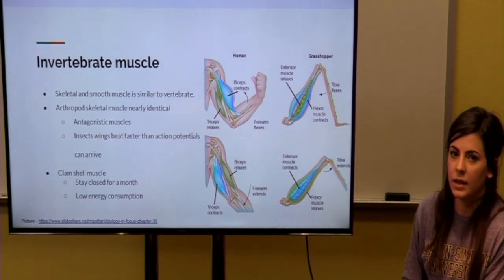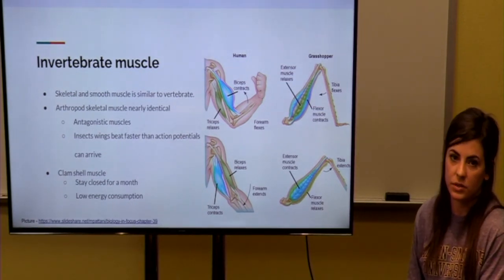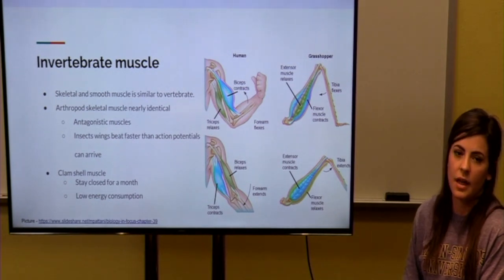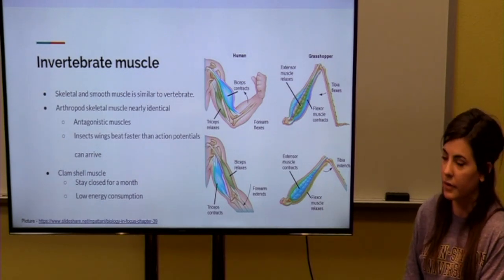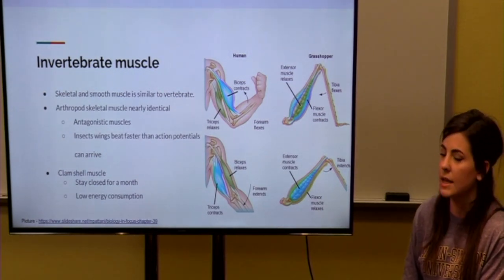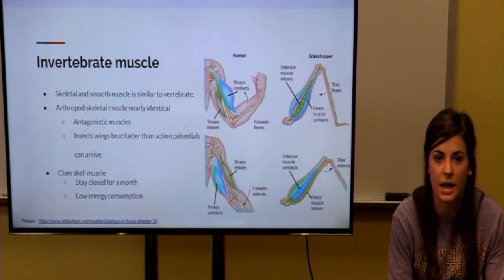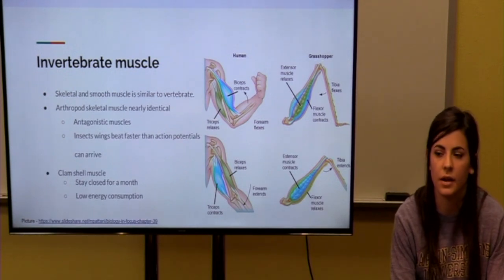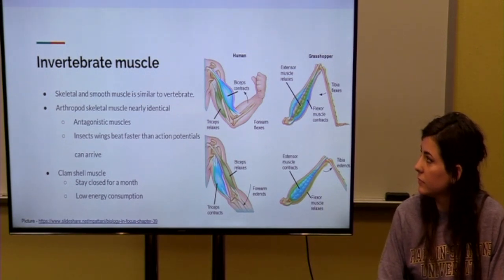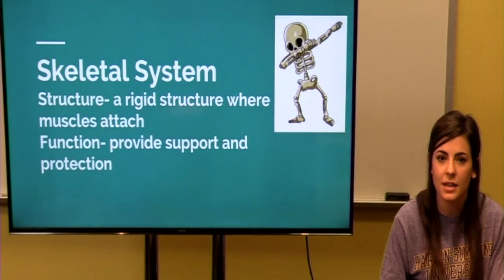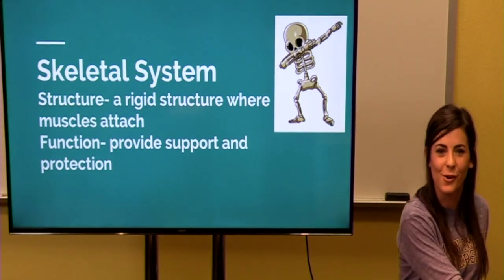But the difference between like arthropods or insects for example, their wings beat faster than action potentials have time to arrive, so they don't use that whenever they use their wings. And also another example is clam muscle shells. They can stay closed for a month at a time, and they do this by a very low energy, very slow energy consumption. And that's the end of the muscle part of our section, and now Morgan Ward will take over.